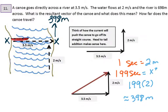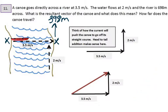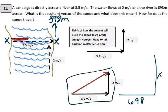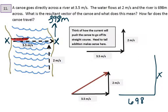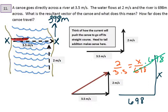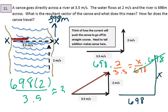The other way to find this is using similar triangles. You can set up a proportion: 2 over 3.5 equals x over 698. Multiply both sides by 698, then do the math — 698 times 2 divided by 3.5 — and you get approximately 398 meters as well. Both methods give the same answer.